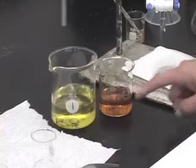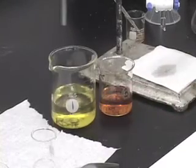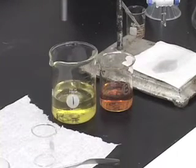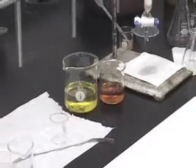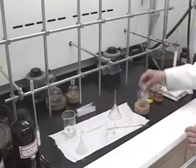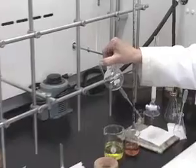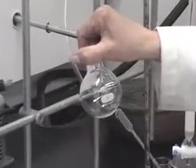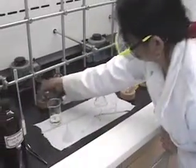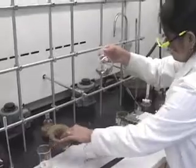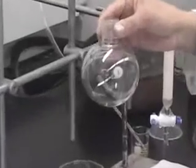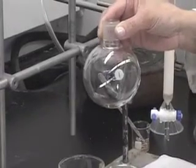We want to transfer these two solutions to pre-weighed round bottom flasks. What do I mean by pre-weighed? You have weighed the empty, clean, dry round bottom flask and noted its weight. I have one 100 mL round bottom flask—clean, dry, and pre-weighed. I also have a 250 mL round bottom flask, also clean, dry, and pre-weighed.